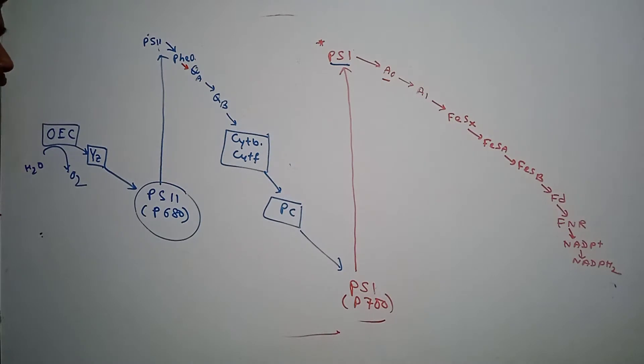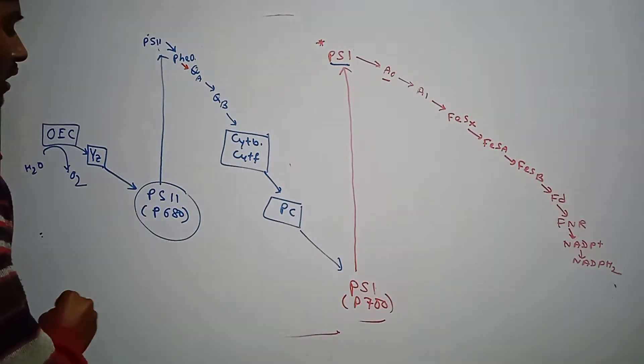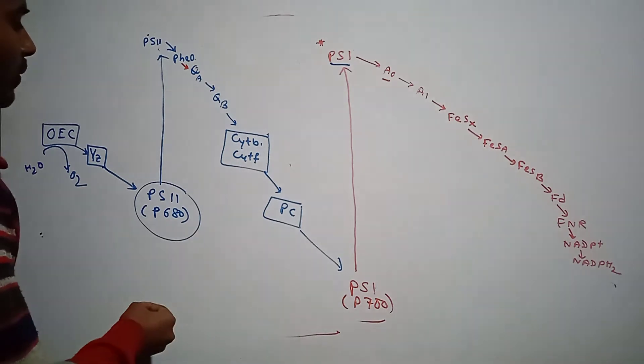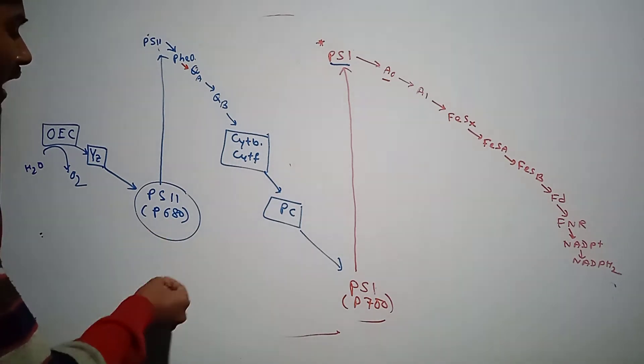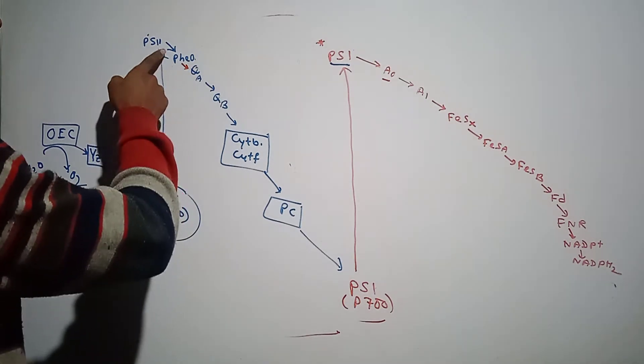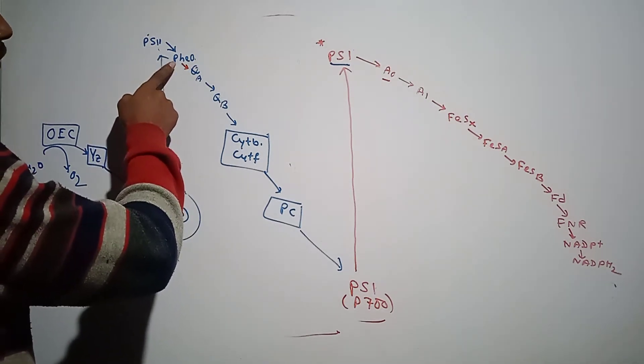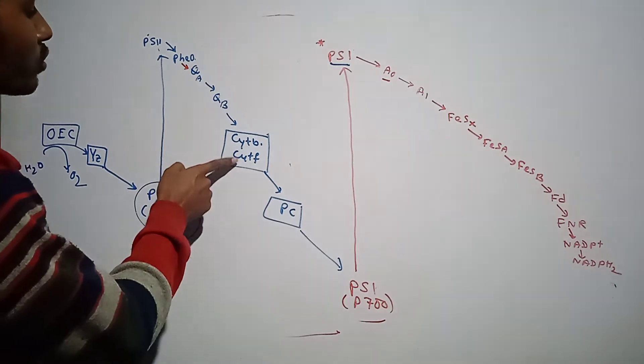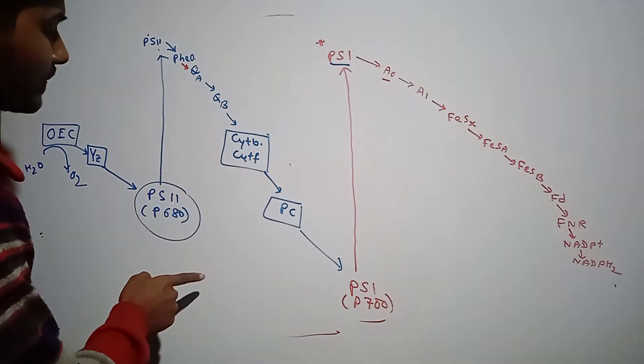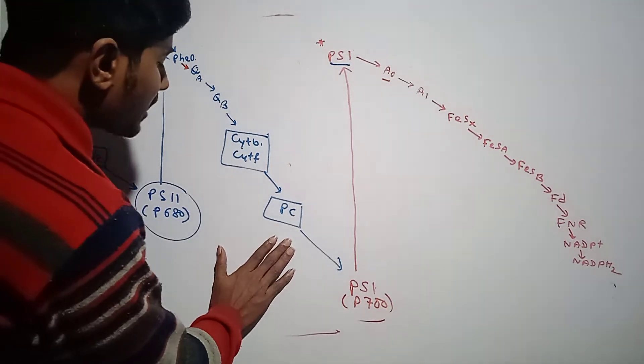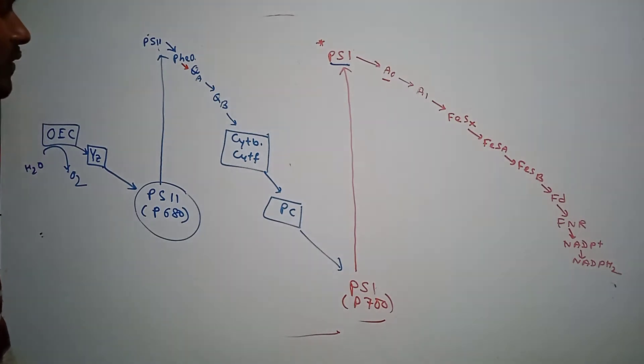Now, the Photosystem 2 reaction center chlorophyll is called P680. It's called P680 because it absorbs light of 680 nanometer wavelength. When it absorbs light, it gets activated and electrons are released. First, the electron goes to pheophytin, from pheophytin to QA, from QA to QB. After QB, it goes to cytochrome b6f complex, from cytochrome b6f complex to PC (plastocyanin), and from plastocyanin it goes to Photosystem 1 or P700.